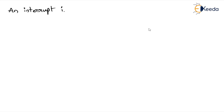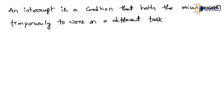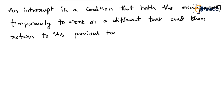Remember the definition: an interrupt is a condition that halts the microprocessor temporarily to work on a different task, and then after completion of the interrupt, it returns to its previous task.